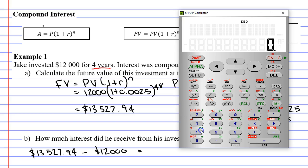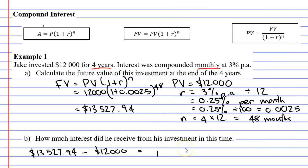So we have $13,527.94 minus $12,000 equals, and we get $1,527.94.